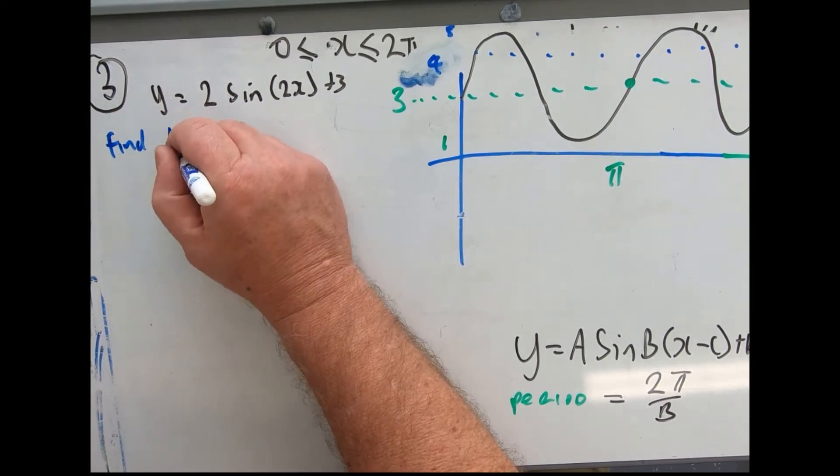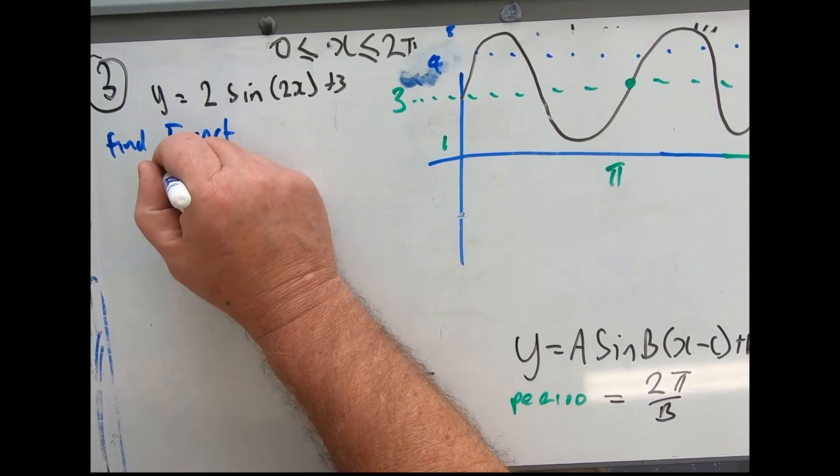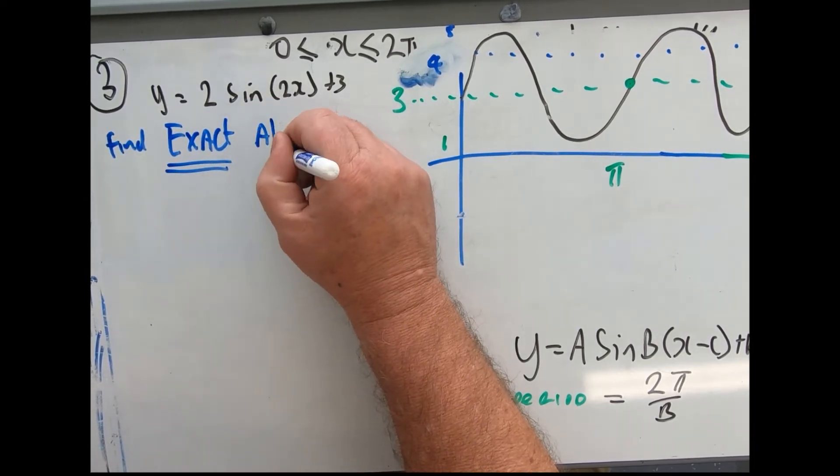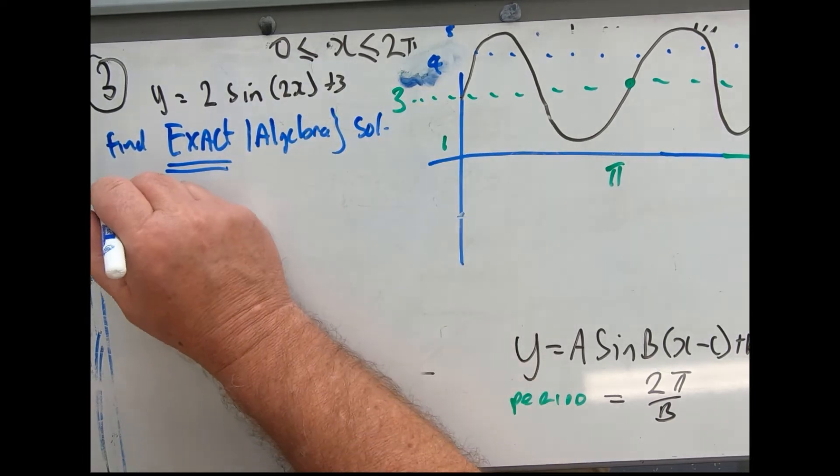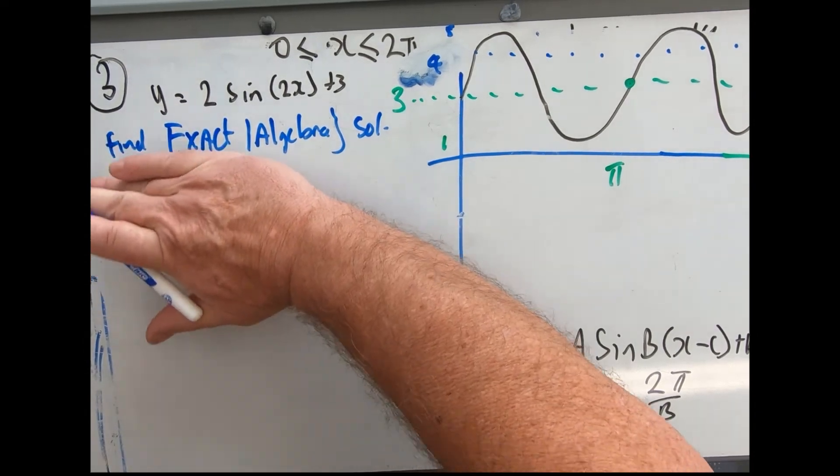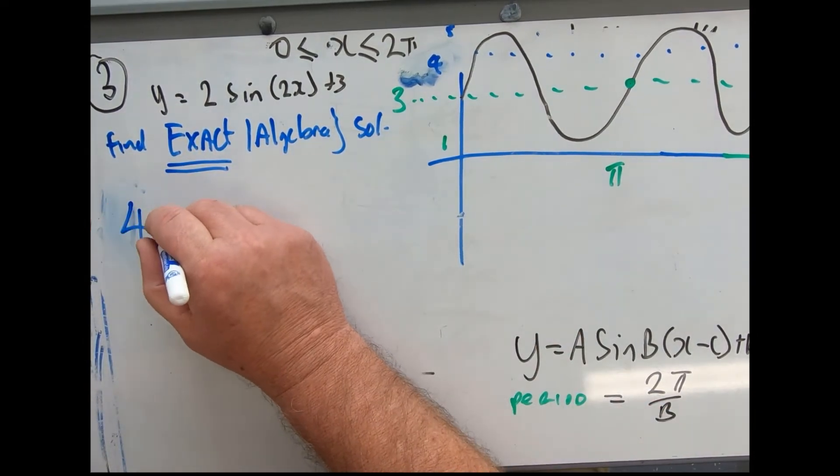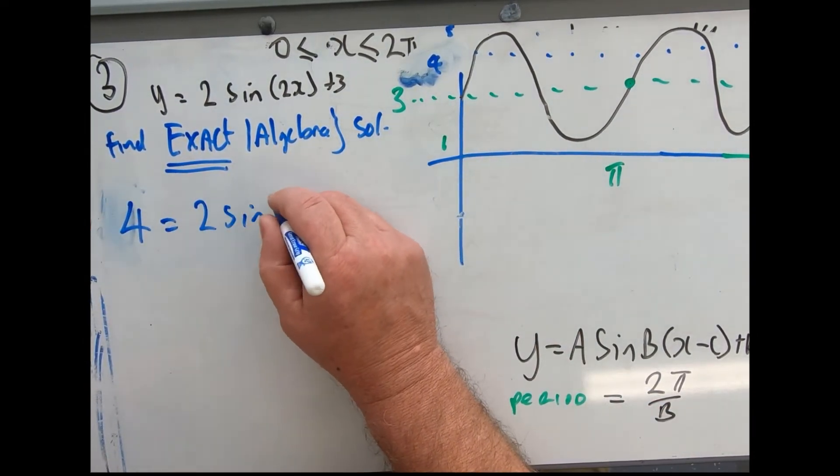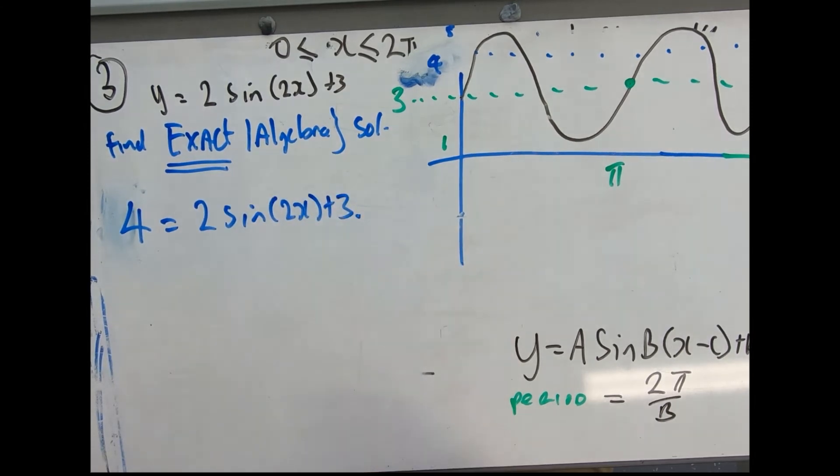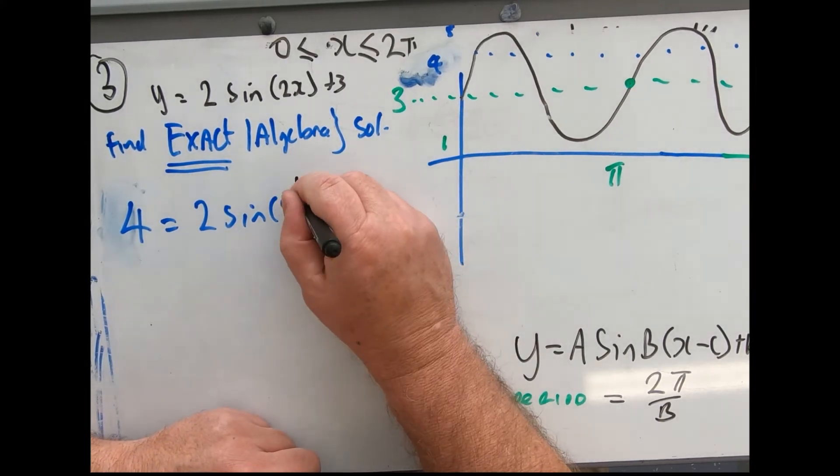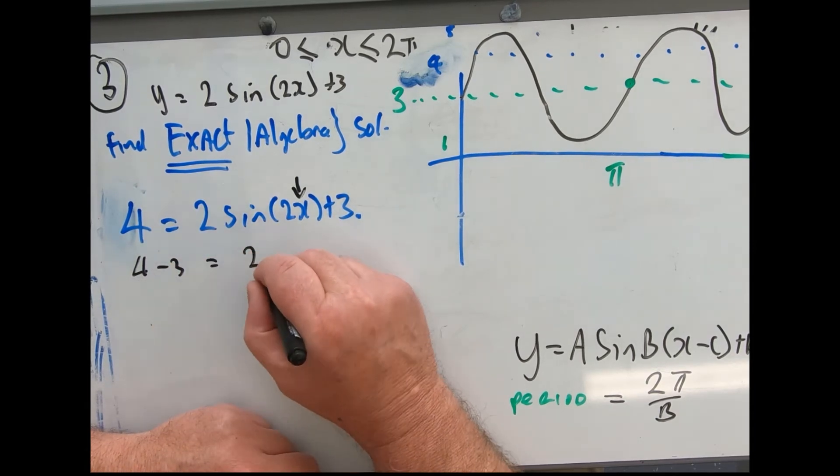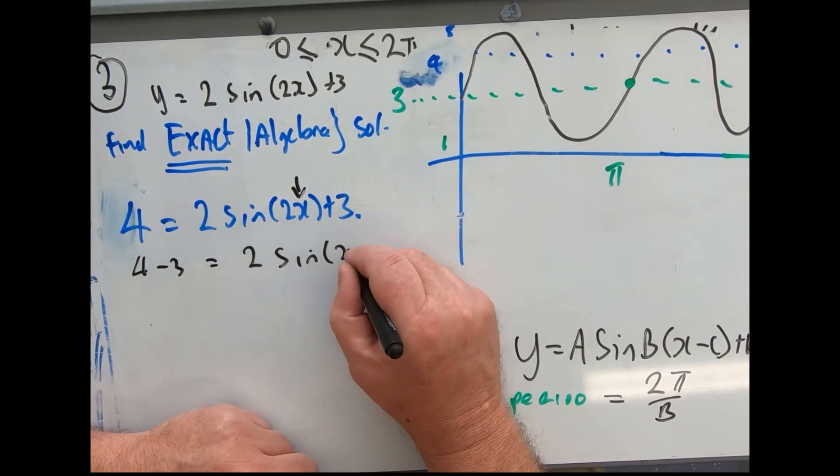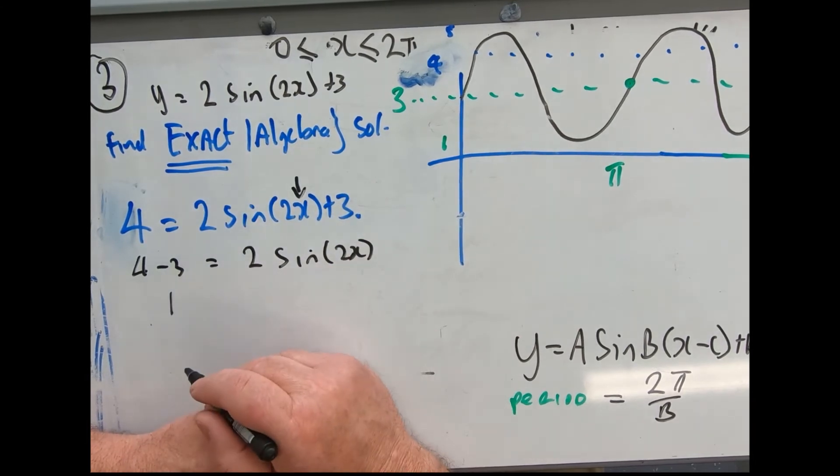Find exact means algebra. Solve y equals 4. So let's write this down: 4 equals 2 sin 2x plus 3. Important that you write this. Now I need that number - let's get everything else out of the way first. 4 take 3 equals 2 sin 2x. It's a little bit simpler. Everybody happy? That's 1.